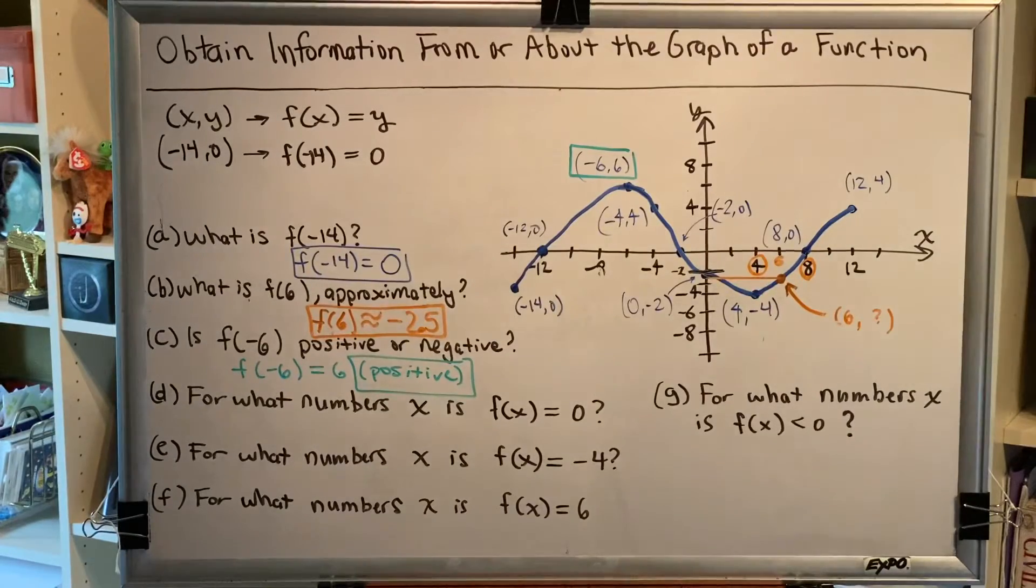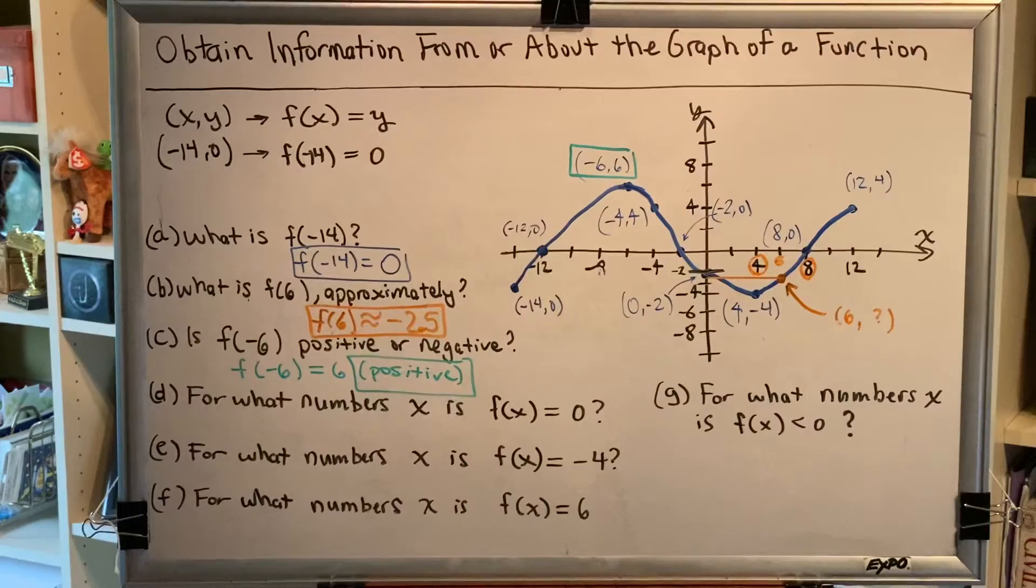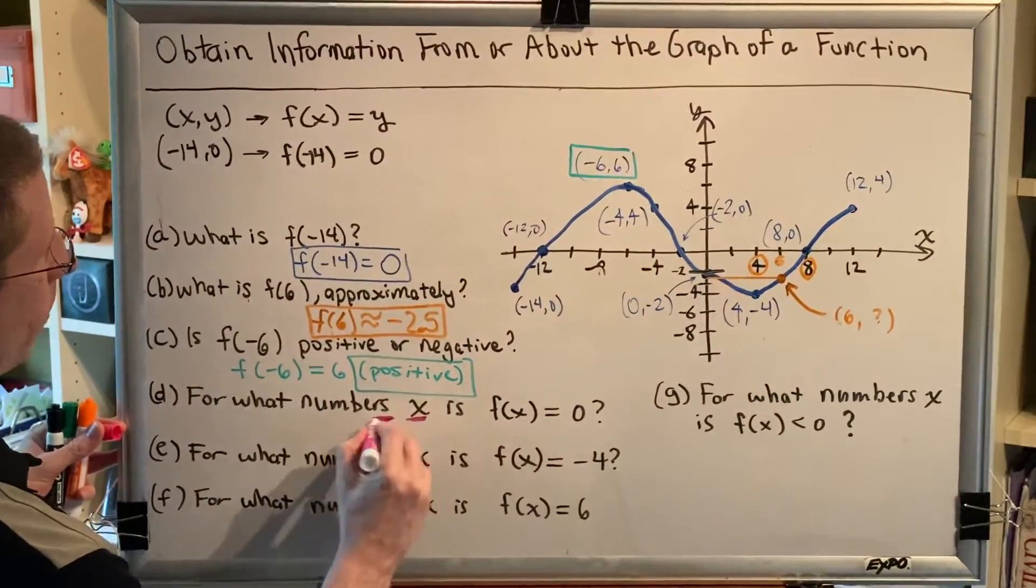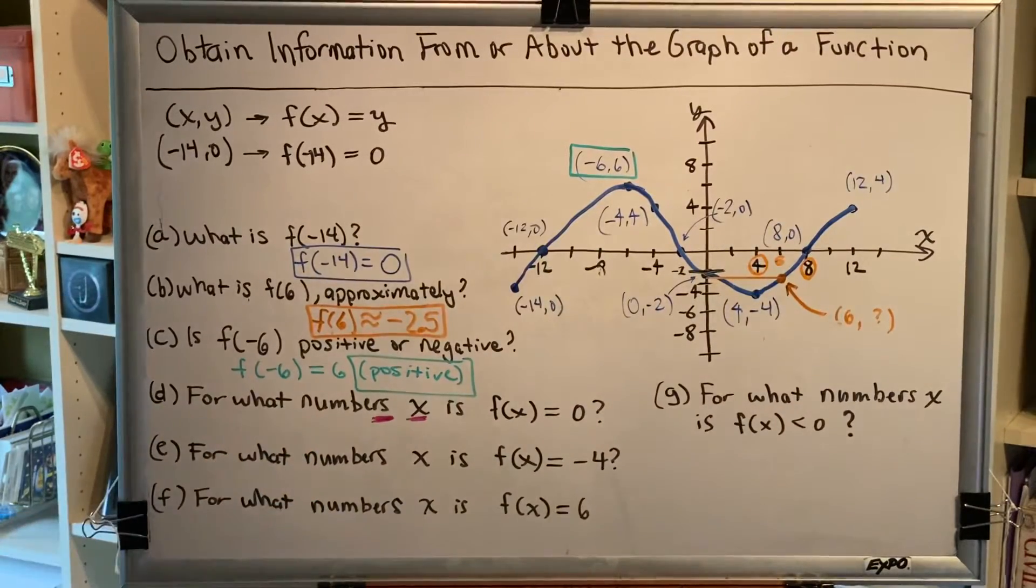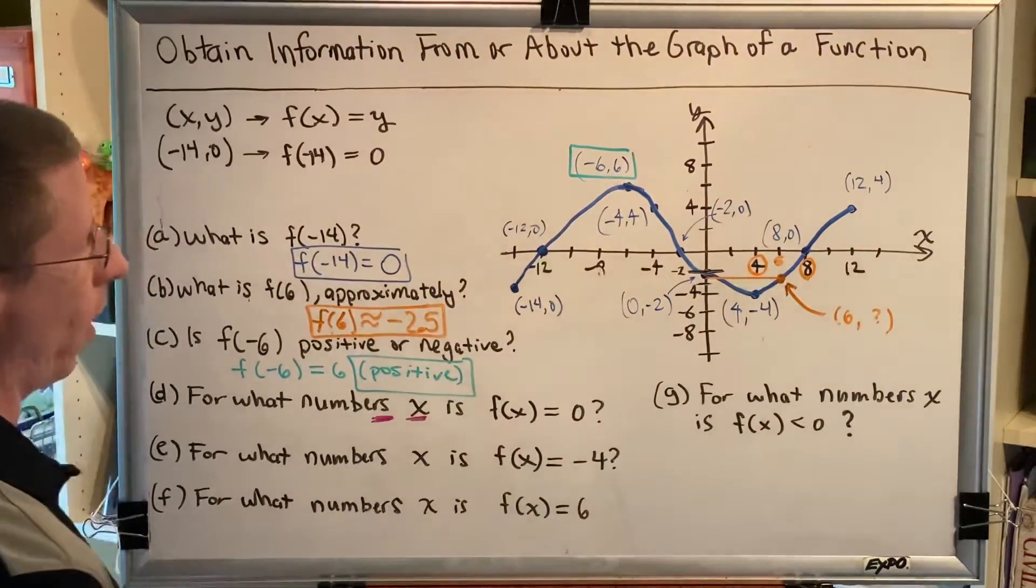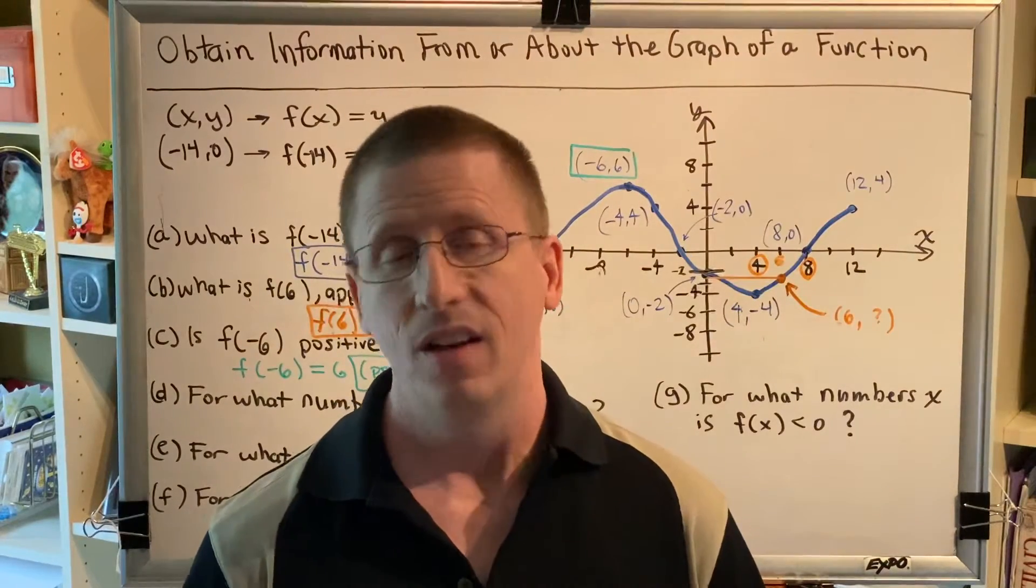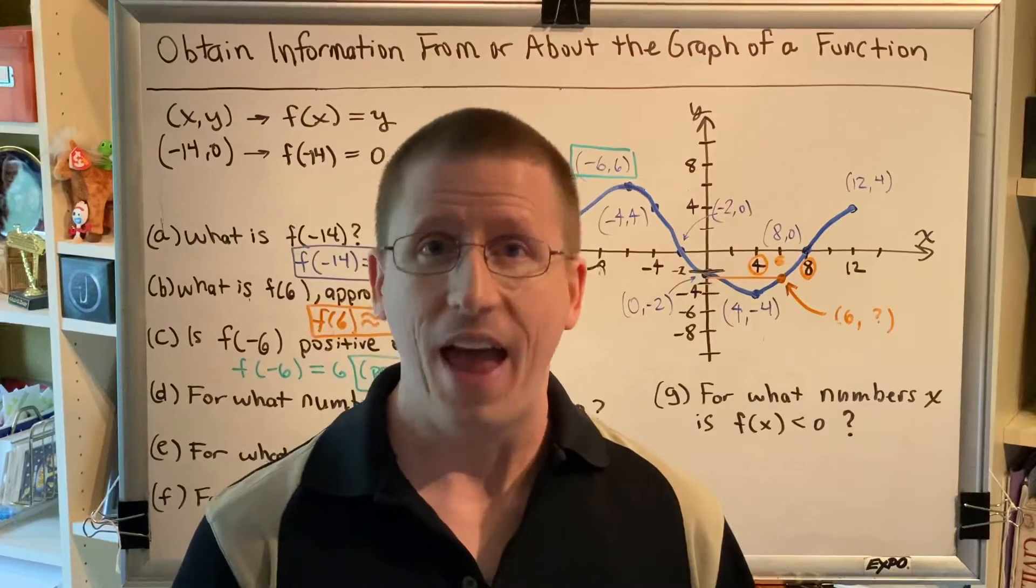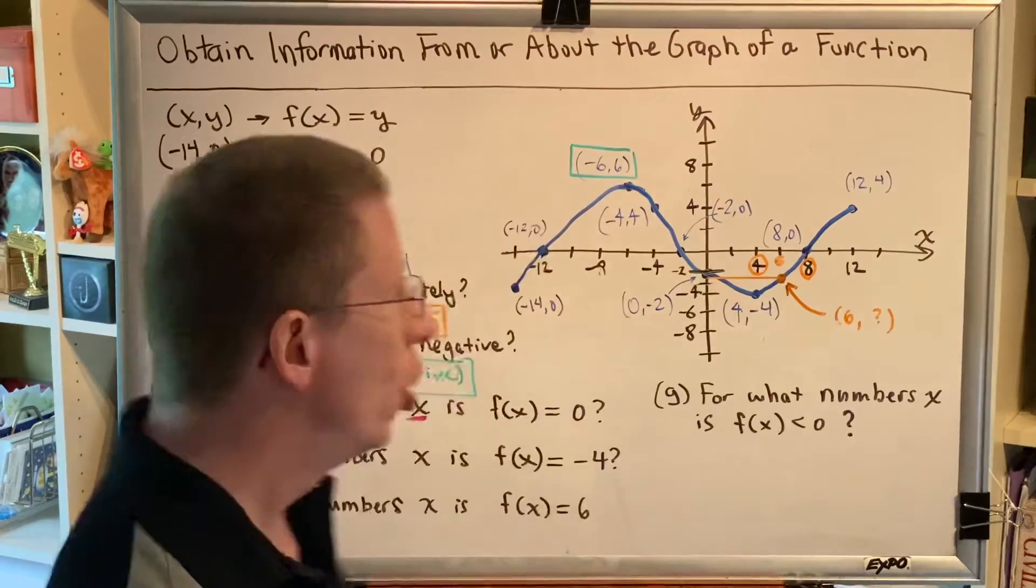Part D: For what numbers x is f(x) equal to zero? Well, the first thing that I would recognize about this problem is that it says numbers. That means I'm looking for x and I'm probably looking for more than one because this is a plural word, numbers. The other thing that I would notice is that it says f(x) equals zero. And it's very important for you as the math student to recognize the difference between x and f(x). They are different. x is x. f(x) is y.